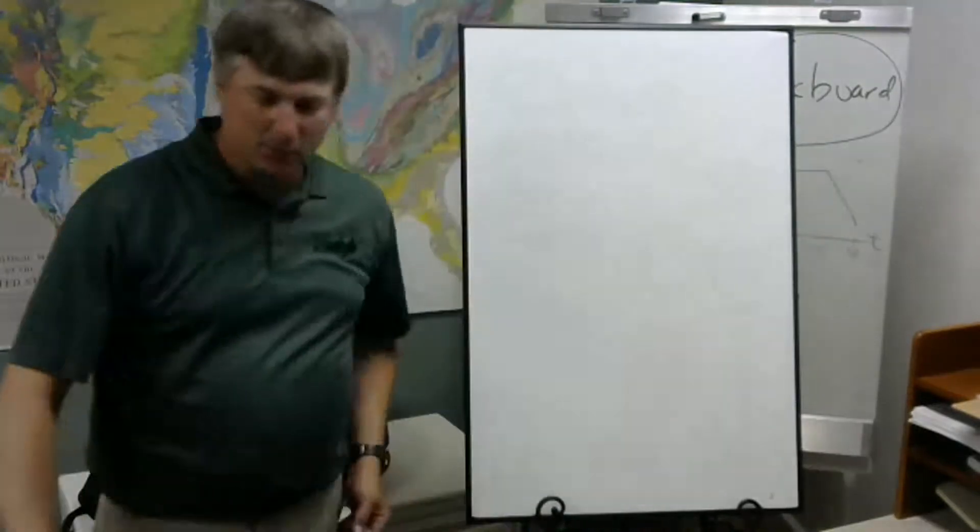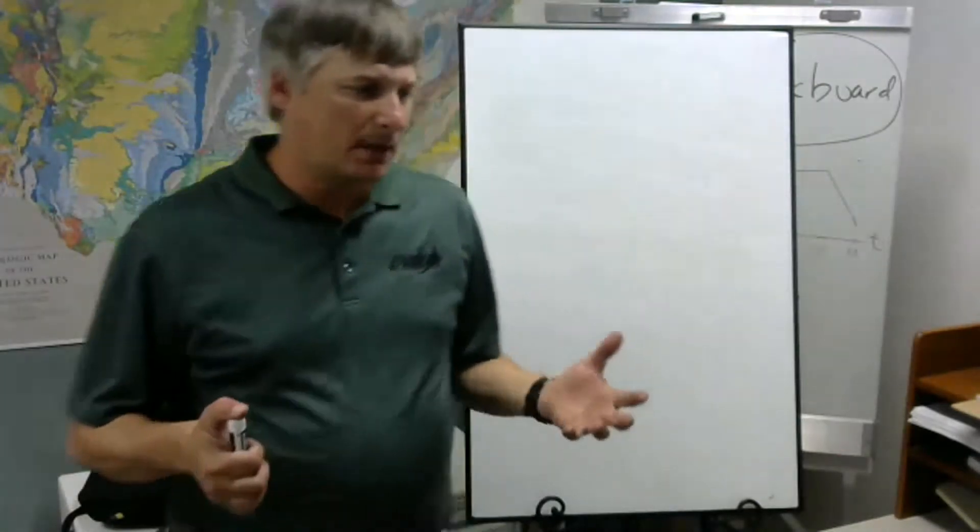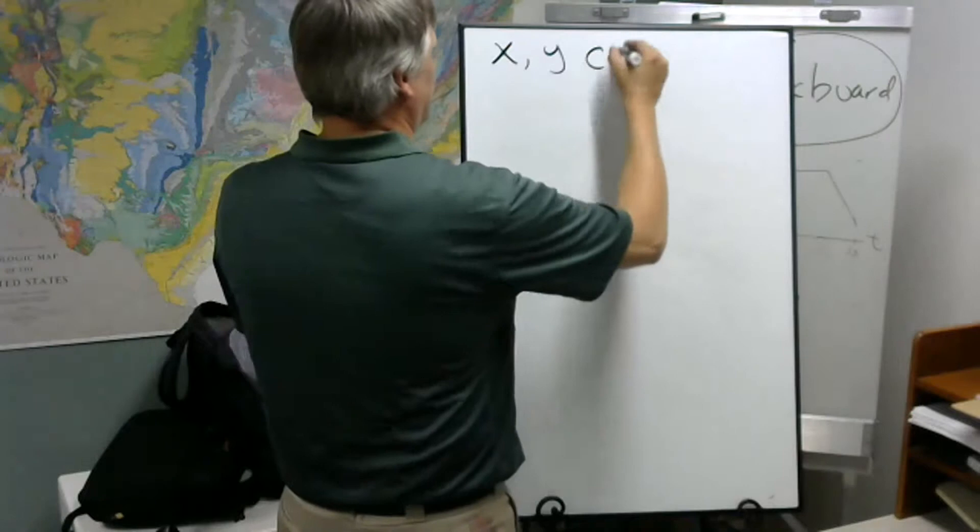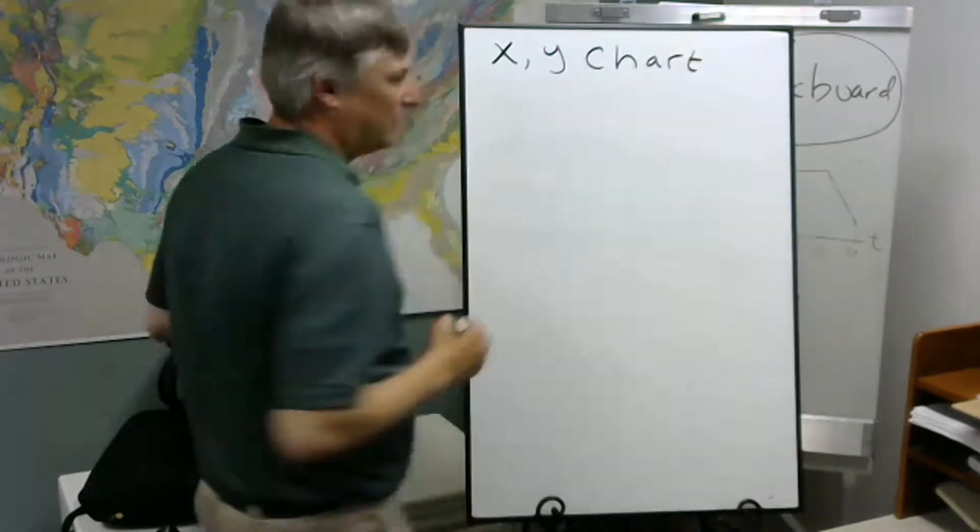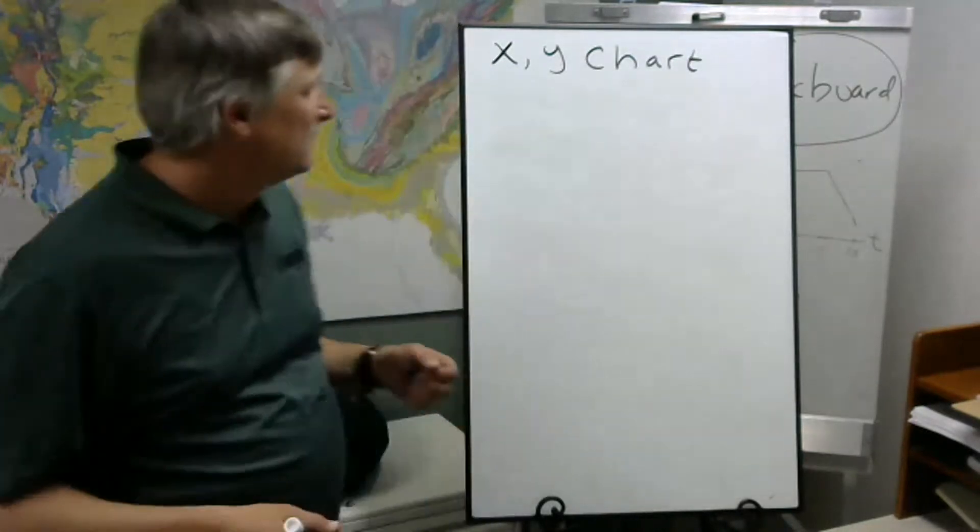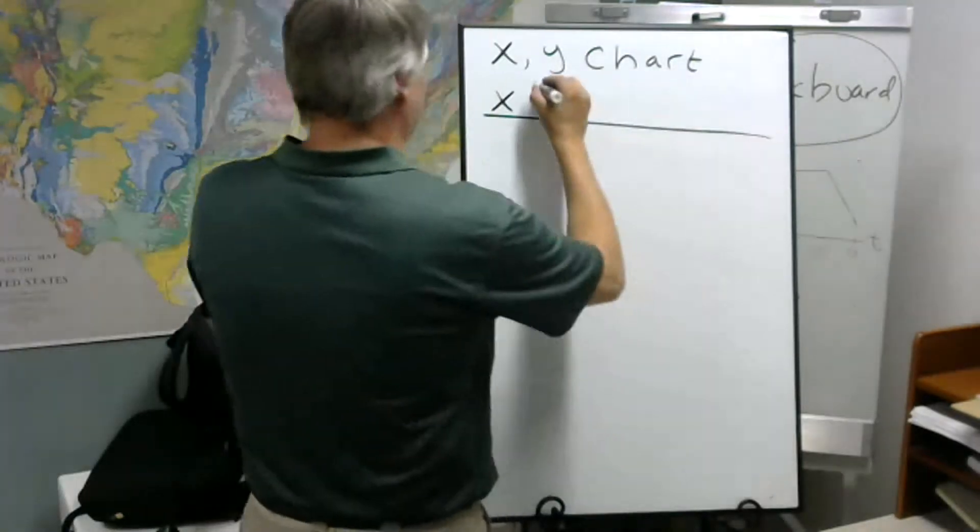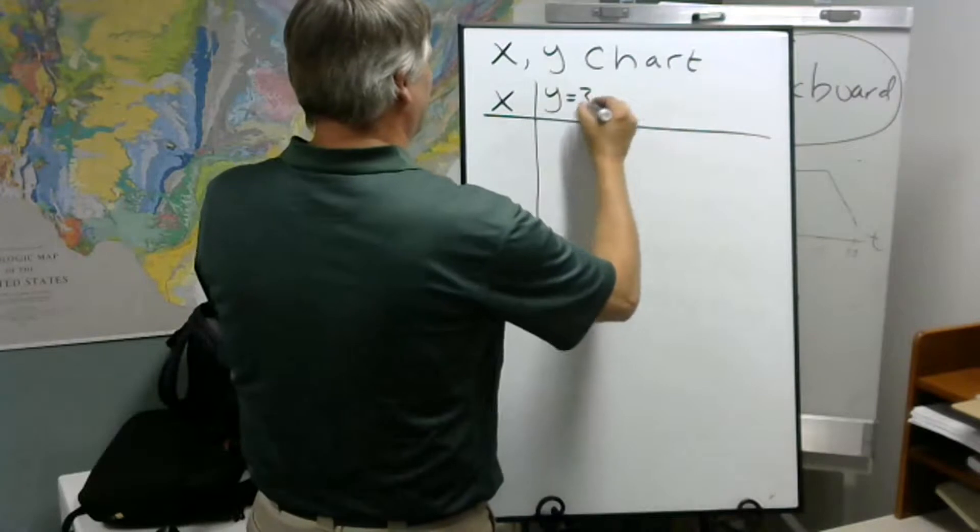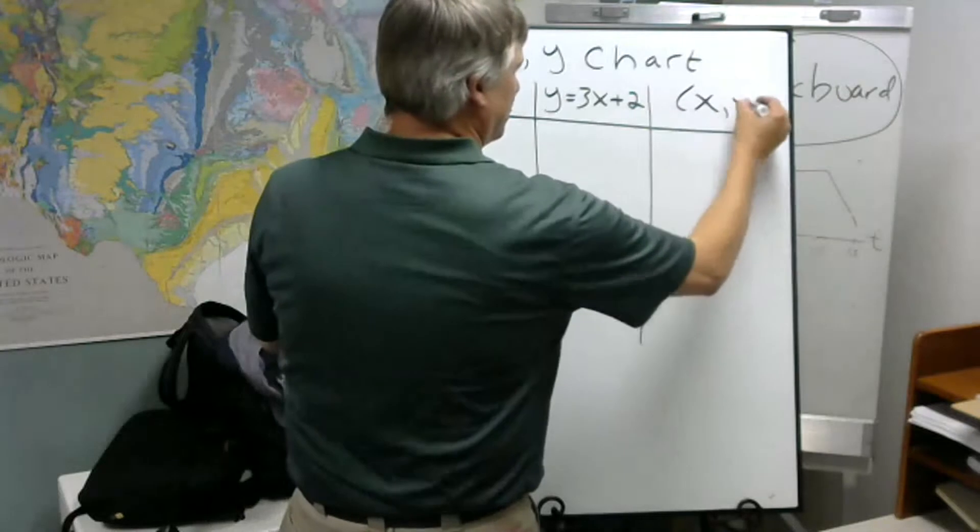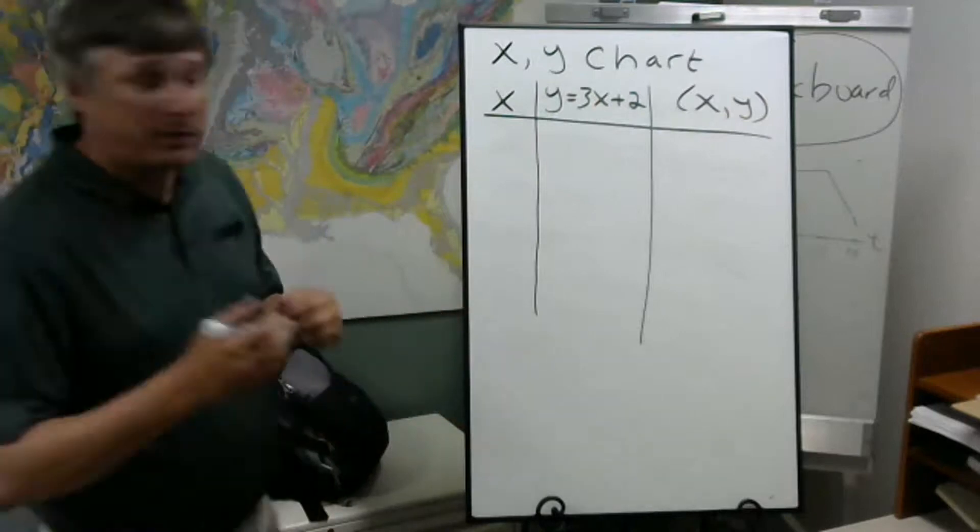Now, oftentimes we want to characterize an equation. And what we can do is we can come up with a whole bunch of ordered pairs. And this is what I call an x, y chart. So we're going to try to understand or get a sense of what this equation is doing with the inputs. So let's say we do this: choose a bunch of inputs, we'll have our outputs. And these will be the ordered pairs we derive from this equation by putting in inputs and collecting outputs.